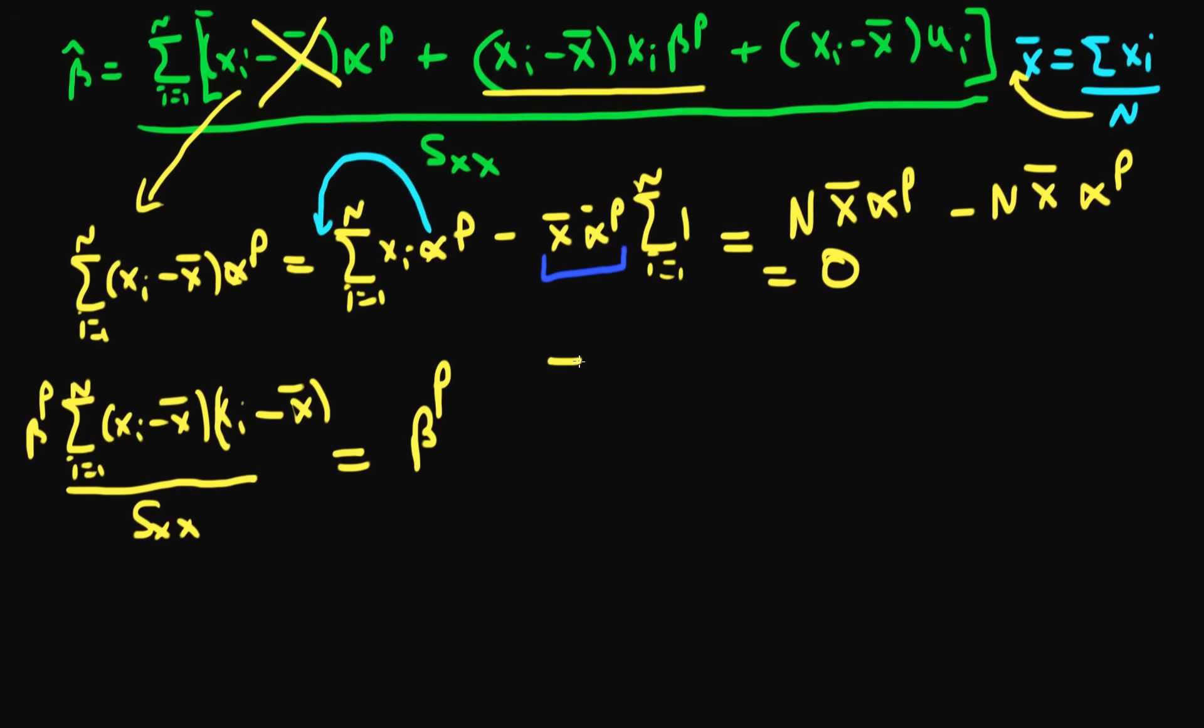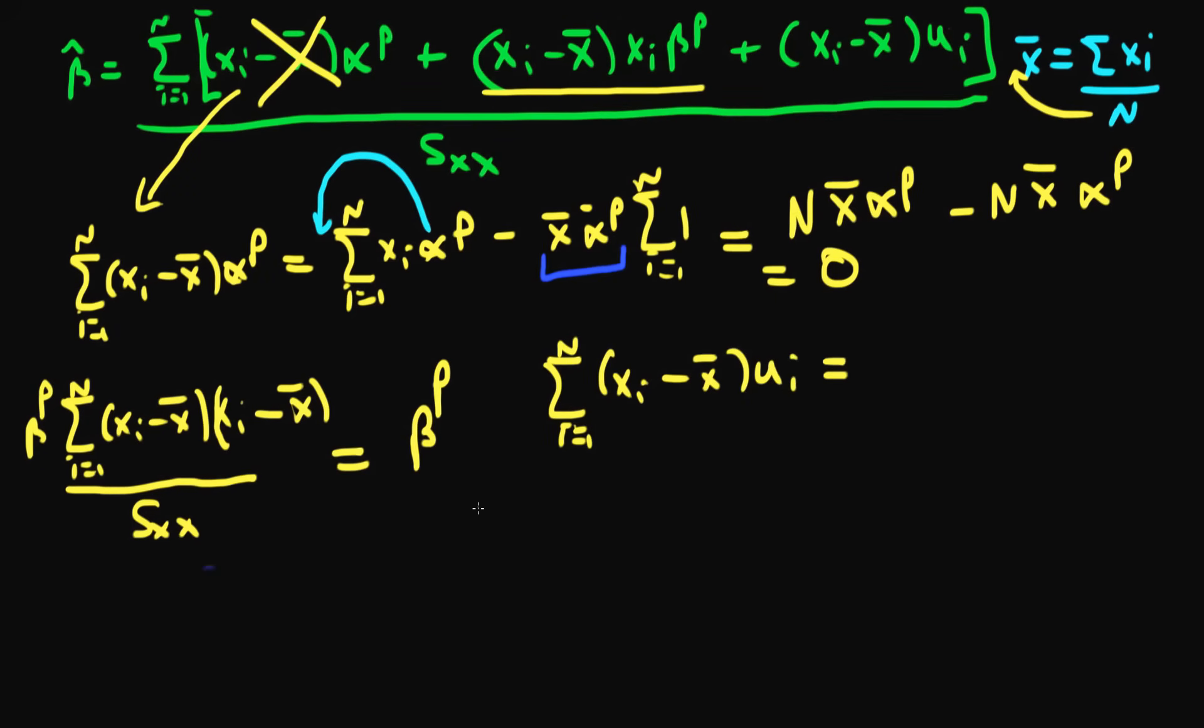And so we're just left with this final term here, which is the sum of i equals 1 to n of xi minus x-bar all times ui. And actually, before we take expectations, we can't actually change this last term. So we're just going to leave this last term as it is. So I hope you can see that we've greatly simplified this mess at the top here, and we've got beta hat being equal to b2p, because this term involving alpha p has disappeared, plus we've got the sum of i equals 1 to n of xi minus x-bar all times ui divided by sxx.